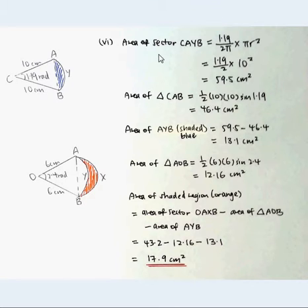First, we consider the area of sector CAYB, which is 1.19 over 2π times πR², where R equals 10. So we have 59.5 cm².